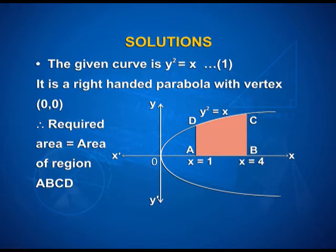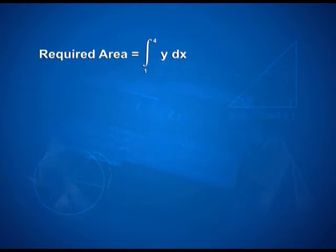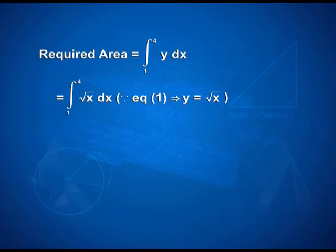Here you can see it is a right-handed parabola with the shaded region A, B, C, D. x is equal to 1 here at A and x is equal to 4 at B. Therefore, the required area is equal to the integral from 1 to 4 of y dx, which is equal to the integral from 1 to 4 of the square root of x dx.